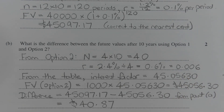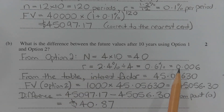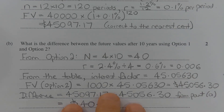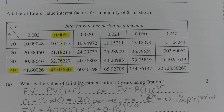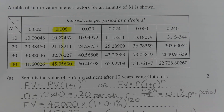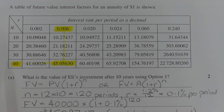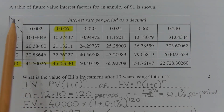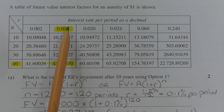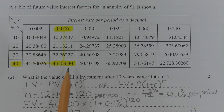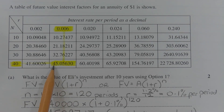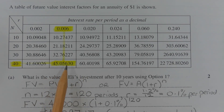The next step is to locate the interest factor corresponding to N = 40 and R = 0.006 using the table. Referring to the table, the row N = 40 and column R = 0.006 intersect at the value 45.05630. So the interest factor to use is 45.05630.